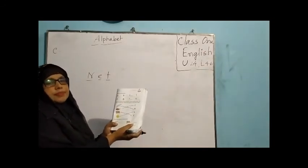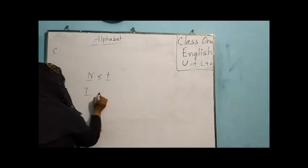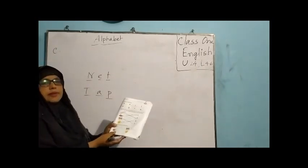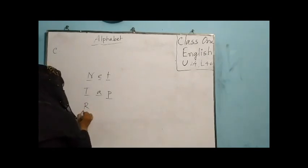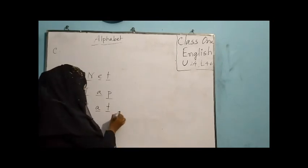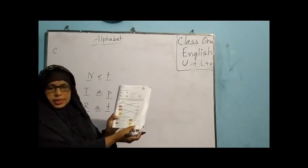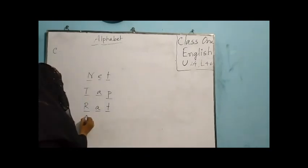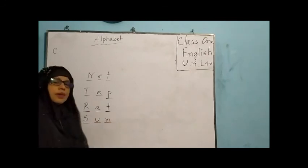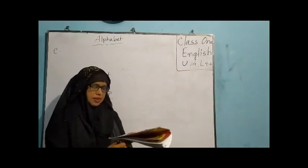The picture — what's this? It's a net. The spelling of net is N-E-T. Write N-E-T. Next — tap. The spelling is T-A-P. Next — red. R-A-T. And S-U-M. Thank you, it's very easy. Yes, you have done well. Thank you very much.